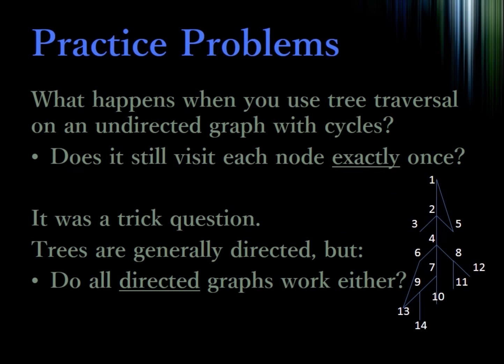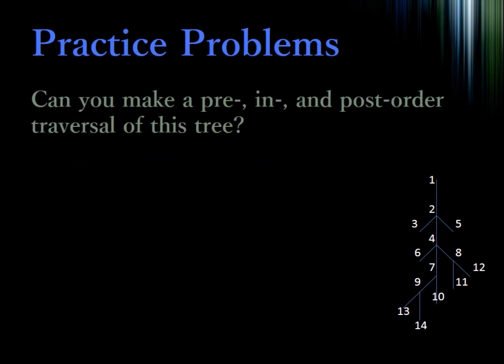And that's it — pretty short video, practice problems time. What happens when you use a tree traversal on an undirected graph with cycles? Does it still visit each node exactly once? It probably depends on what implementation you're using, so think about that. Earlier I kind of glazed over this, but one of the things I mentioned was whether a node was visited or not — this might be important for when you're trying to traverse graphs. And finally, can you make a pre-, in-, and post-order traversal of this sample tree?